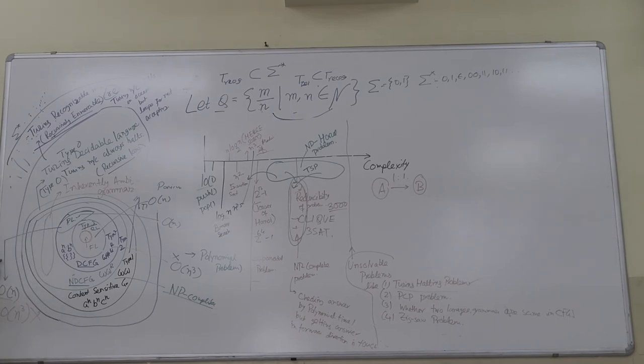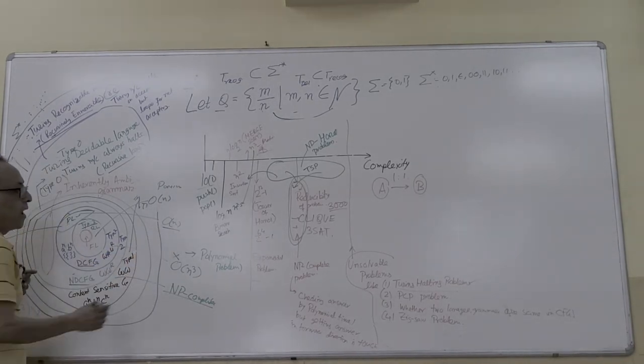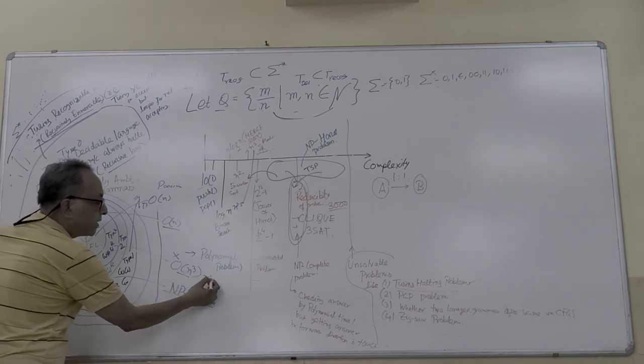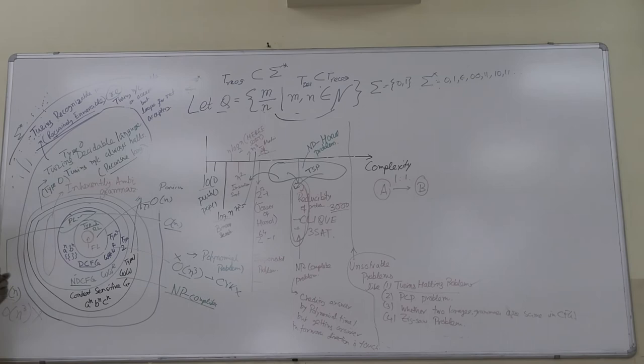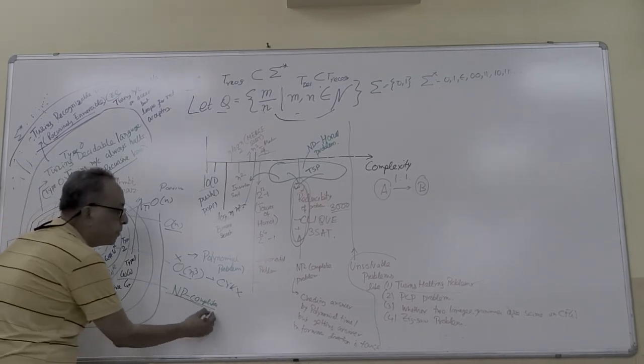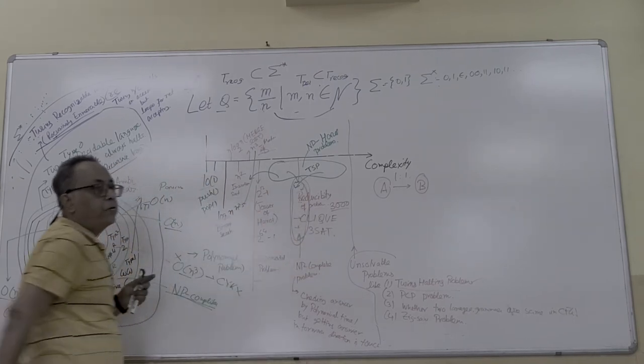For context-free grammar or deterministic context-free grammar, we can do it through O(n) in practice. Ideally it's O(n cube) by CYK algorithm, but we do not use it because O(n cube) is not acceptable. If you go for context-sensitive grammar, the programming becomes an NP-complete problem, anti-climactic. Parsing is absolutely impossible.